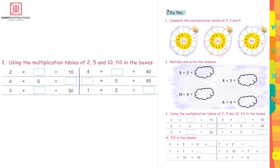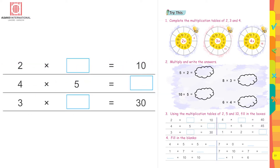Using the multiple tables of 2, 5, and 10, fill in the boxes. 2 ones are 2, 2 twos are 4, 2 threes are 6, 2 fours are 8, 2 fives are 10. So here you are going to put 5 in the box.